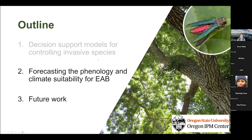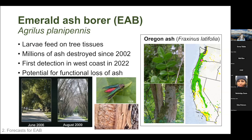Now I'm going to show examples of our modeling tools for emerald ash borer — specifically models that forecast its phenology and climate suitability. Emerald ash borer is a very small, shiny green beetle native to Asia. It's been in the United States since at least 2002, first found in Michigan. The larvae feed on the phloem and xylem interface of trees, cutting off food movement to the roots and water to the canopy.